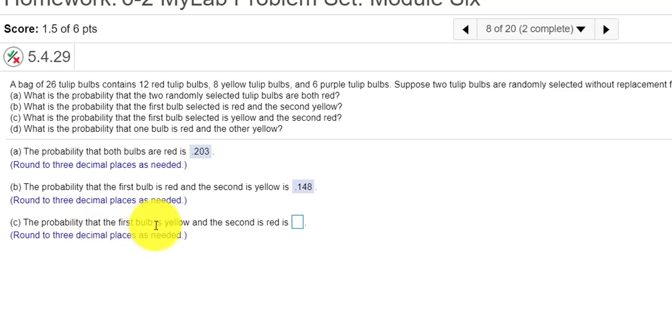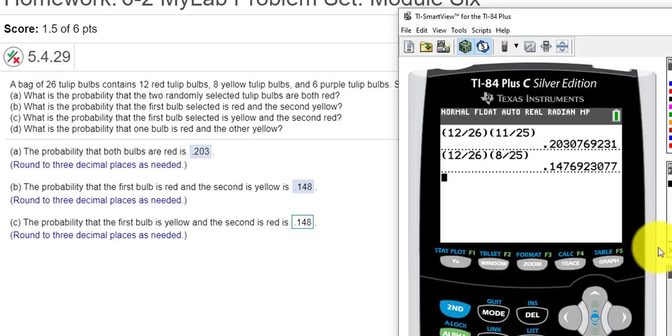What is the probability that the first bulb is yellow and the second is red? I think it's still going to be the same probability, still going to be 0.148, because all we're doing is just switching the order. The first is yellow would be 8 out of 26, and the second is red would be 12 out of 25. I'll type it up, 8 divided by 26.